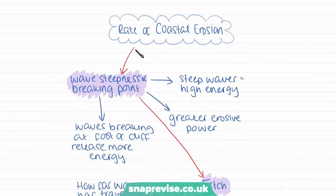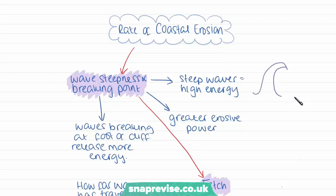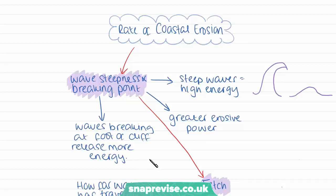Now we're going to look at some of the factors that might affect the rate of coastal erosion — how quickly or slowly erosion is occurring. The first factor is wave steepness and breaking point. Waves that are steeper have much higher energy and therefore a greater erosive power on the rocks. Also, waves breaking at the foot of the cliff release more energy — almost like a big punch on the rocks — whereas a wave that breaks further out to sea will have lost much of its energy by the time it reaches the cliff foot, so erosion will be much weaker.